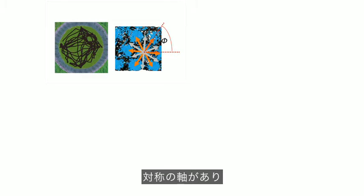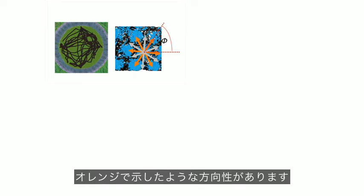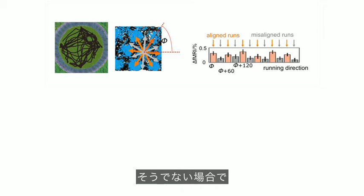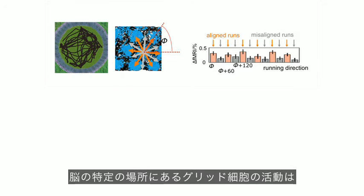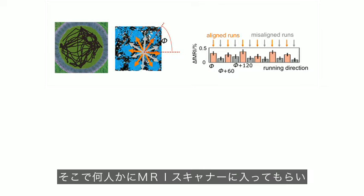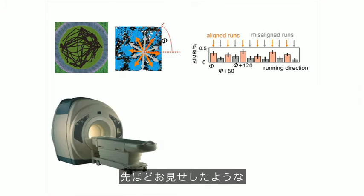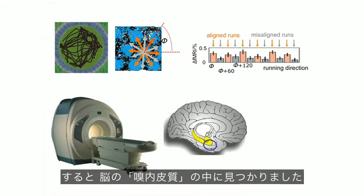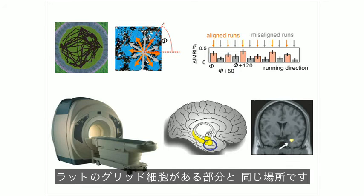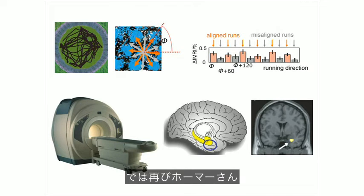Well, because all of the grid-like firing patterns have the same axes of symmetry, the same orientations of grid shown in orange here, it means that the net activity of all of the grid cells in a particular part of the brain should change according to whether we're running along one of these six directions or running along one of these six directions in between. So we can put people in an MRI scanner and have them do a little video game like the one I showed you and look for this signal, and indeed you do see it in the human entorhinal cortex, which is the same part of the brain that you see grid cells in rats.